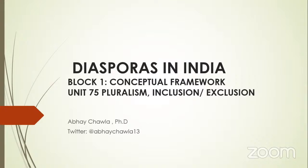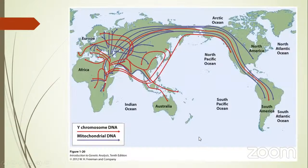Pluralism, inclusion and exclusion. As I was preparing this presentation, the first slide I wanted to show you was this - a map of human migration throughout history. It actually is a map of Y chromosome and mitochondrial DNA. But if we were to take a geographical map of human migration, modern human beings have been on this planet for millions of years.